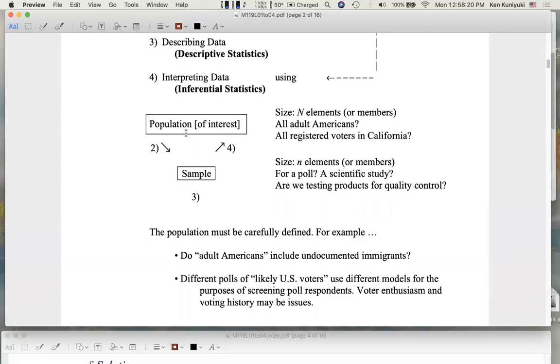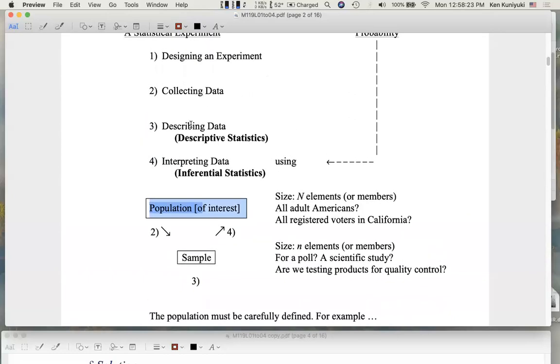So this whole issue of designing the experiment where you describe the population carefully, collecting data to form our sample, which could be a sample of poll respondents or subjects in a scientific study, or maybe some sample products on an assembly line if you're testing products for quality control. From that sample, we collect data to form the sample. Within the sample, we describe the data. We find that, for example, 35% of the registered voters in our poll support President Trump. And then from that, interpreting the data, inferential statistics, what can we see about the population of interest?